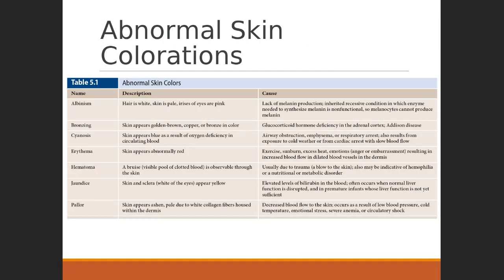There are other skin colorations to note. Albinism was already mentioned. Cyanosis: if there's a lack of blood supply, the skin can take on a bluish tinge, and certain parts of the body like the lips are more prone to that discoloration. Jaundice: elevated levels of bilirubin from liver dysfunction means red blood cells aren't being broken down appropriately. The sclera of the eyes, being so white, can appear shockingly yellow with jaundice — more apparent than in skin tone, unless the skin tone is lighter.